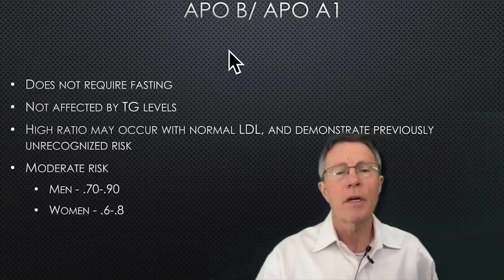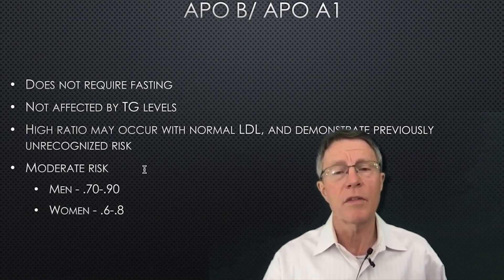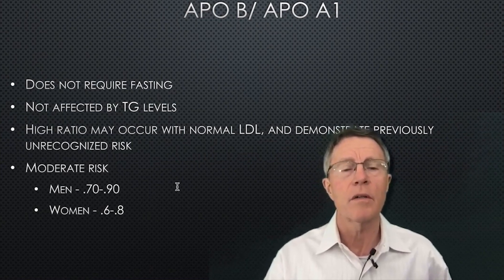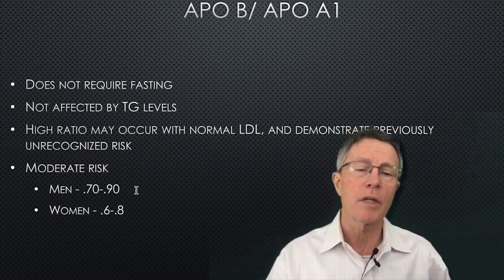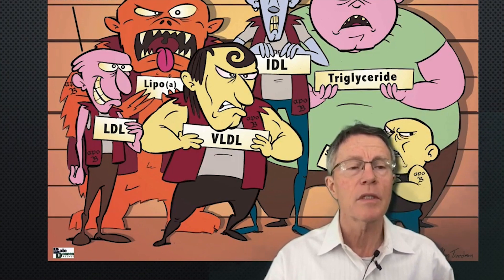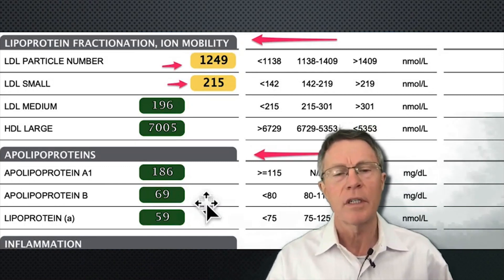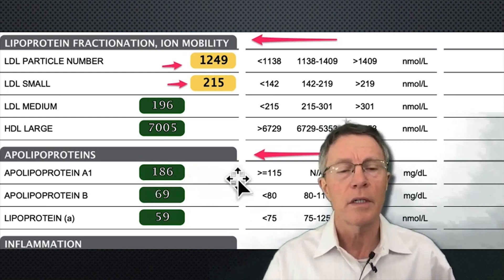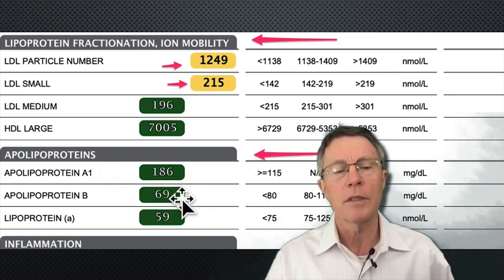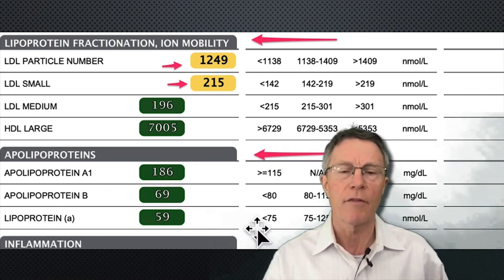You can also look at the ApoB over ApoA1 ratio. It doesn't require fasting and is not affected by triglyceride levels. A high ratio may occur even with a normal LDL but demonstrate previously unrecognized cardiovascular risk. Moderate risk for men is a ratio of 0.7 to 0.9, and for women 0.6 to 0.8. Labs will typically show apolipoprotein A1 and apolipoprotein B, and most labs I order will also show lipoprotein A, though you usually have to specifically order that.